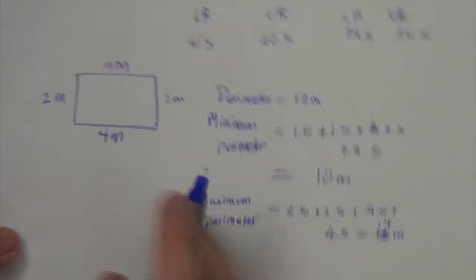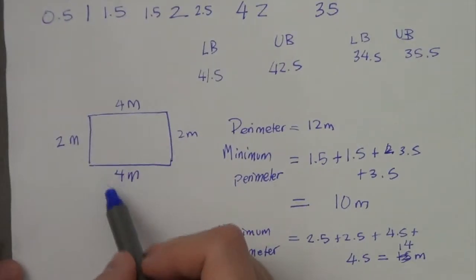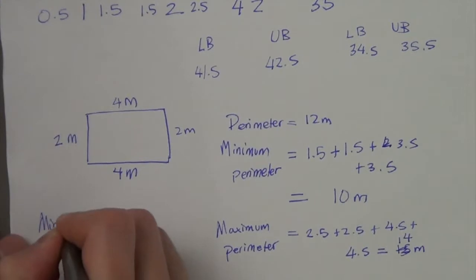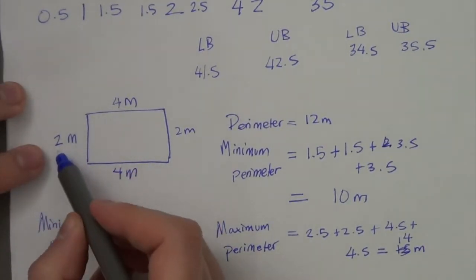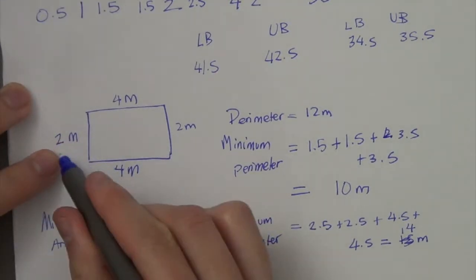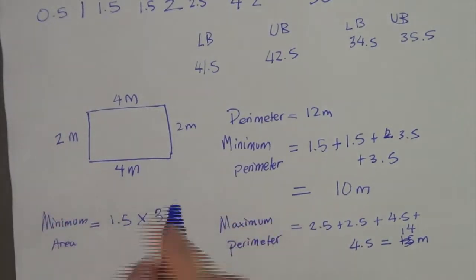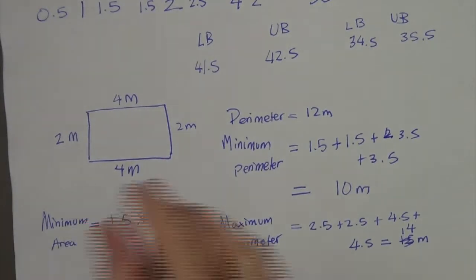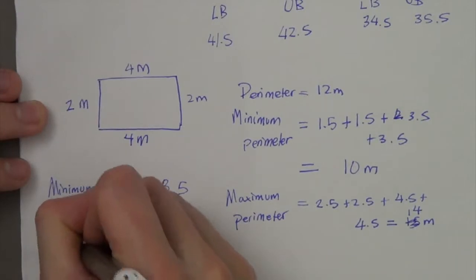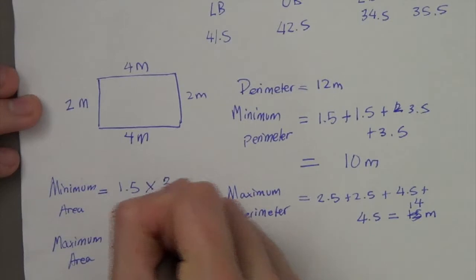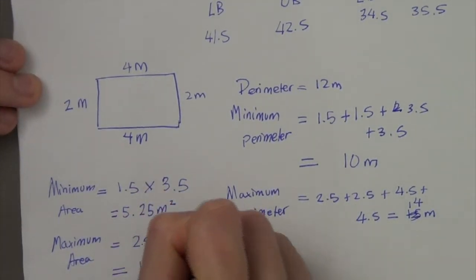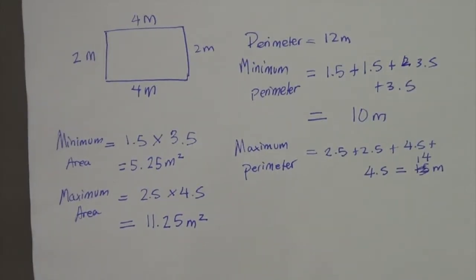Now for area. To find the minimum area, we use the lower bounds: 1.5 times 3.5, which gives us 5.25 meters squared. For the maximum area, we use the upper bounds: 2.5 times 4.5, which gives us 11.25 meters squared.